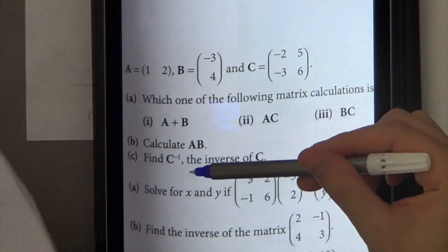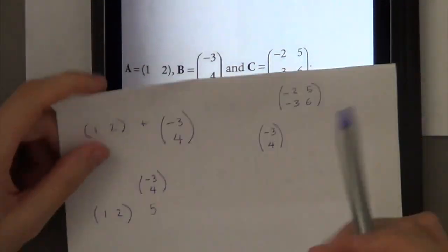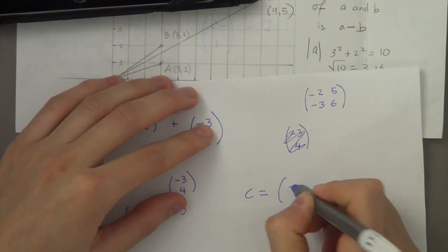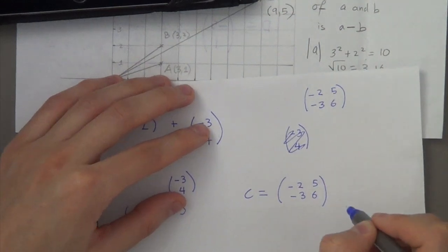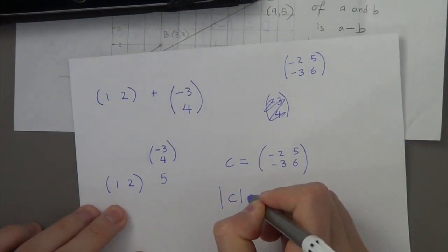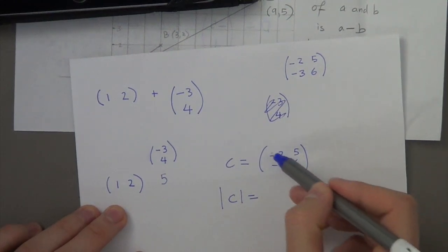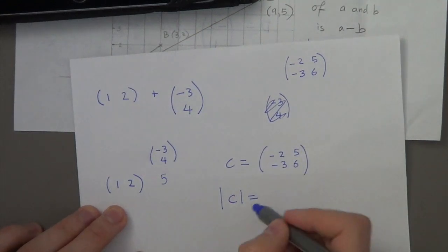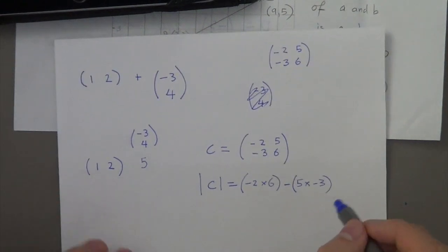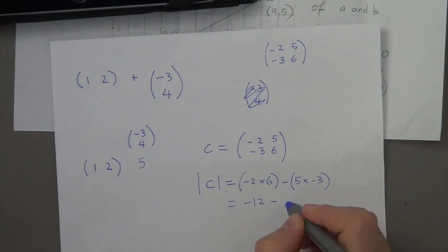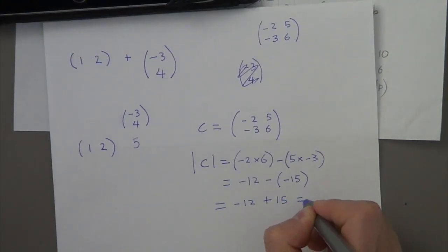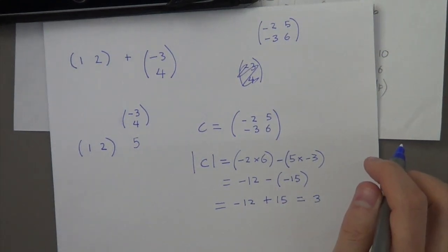Find C inverse, the inverse of C. So C is equal to minus 2, minus 3, 5 and 6. In order to find the inverse, I need to first find the determinant. The determinant is minus 2 times 6 minus 5 times minus 3. So this is minus 12 minus minus 15, which becomes minus 12 plus 15, equal to 3.